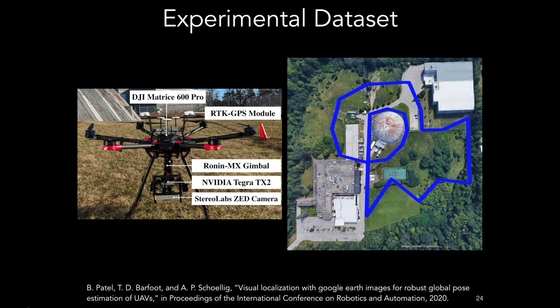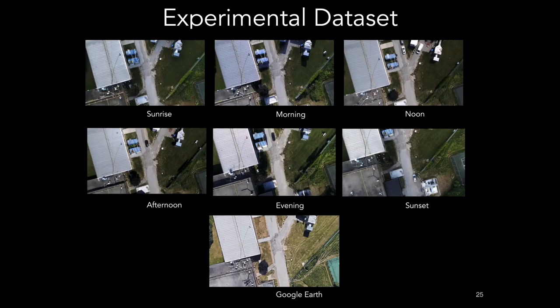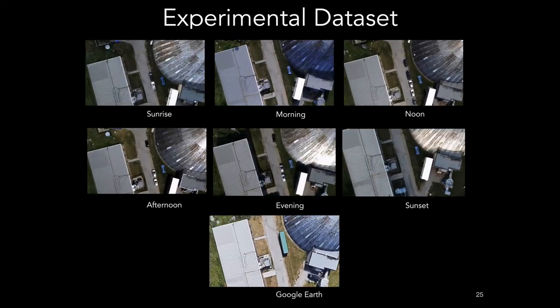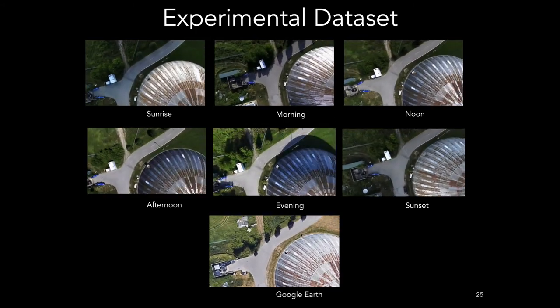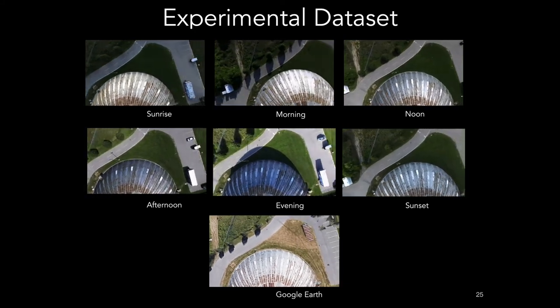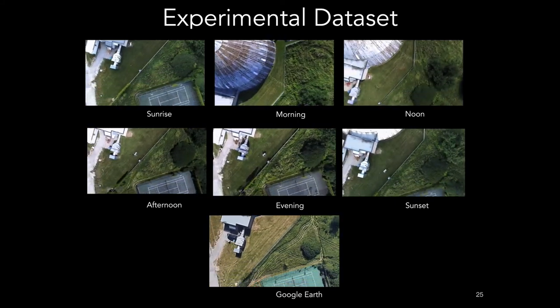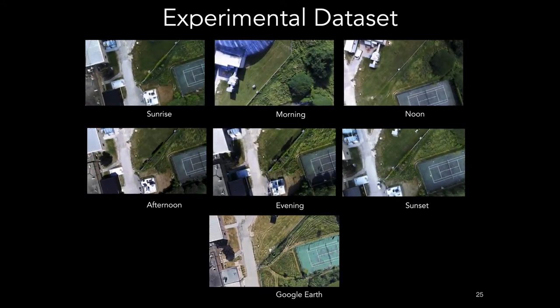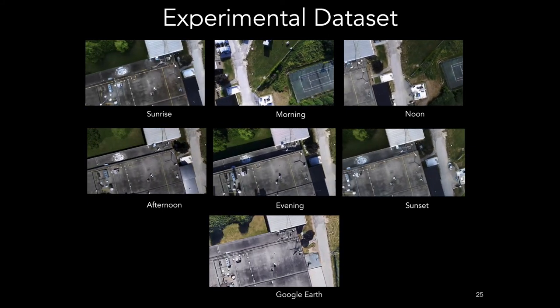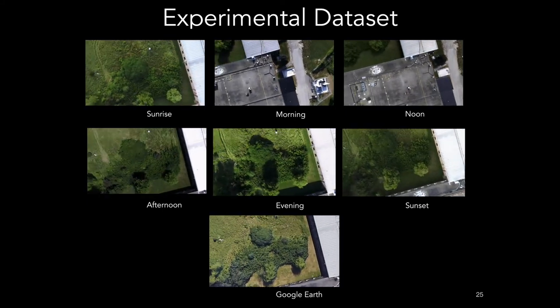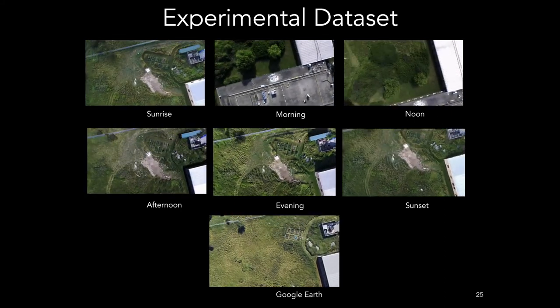We evaluated this method on the same data set used by the mutual information approach. In this data set, the live images were collected by a DJI Matrix 600 Pro equipped with RTK GPS for ground truth and a gimbaled Z camera. Data was collected at six different times of day: sunrise, morning, noon, afternoon, evening, and sunset along a 1.1 kilometer path. You can see the primary difference between these times of day is the shadows in different directions. The path goes over areas with roads and buildings, but also a soccer field and a forested area. You can see the corresponding path rendered in Google Earth on the bottom.